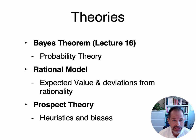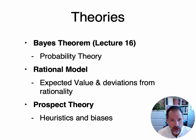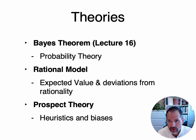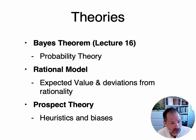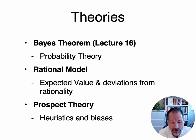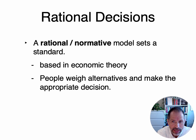Last week I talked about Bayes' theorem and probability theory. One of the things you should have taken from that is that it can be really challenging for humans to use probability. We don't often have access to the base rates or the overall likelihoods, so we do the best we can with the information we have at hand. Today I want to talk about two different theories that account for a lot of human decision-making behavior. The first is a rational model, and we'll see pretty quickly that it depends on having access to probability. Then we'll talk about deviations, cognitive errors and biases, and an alternative to the rational model: prospect theory.